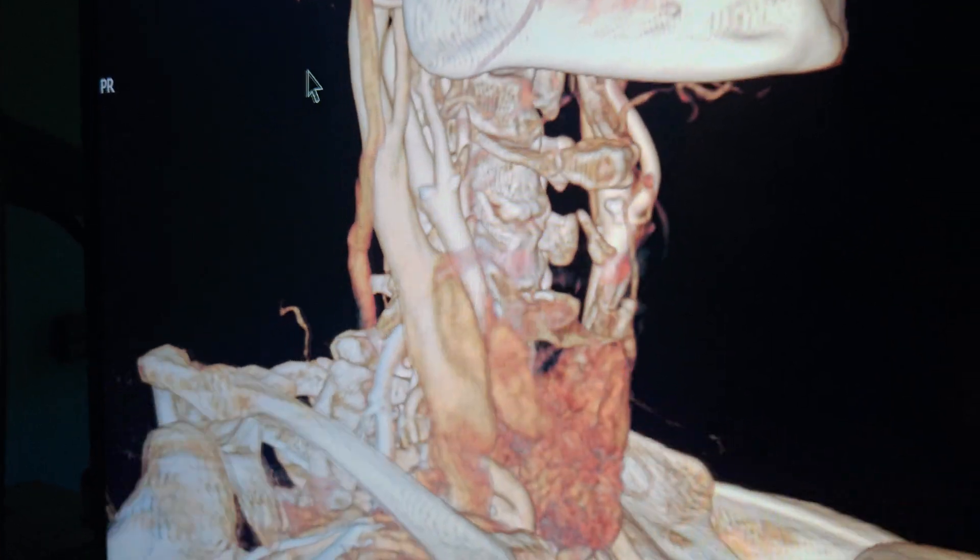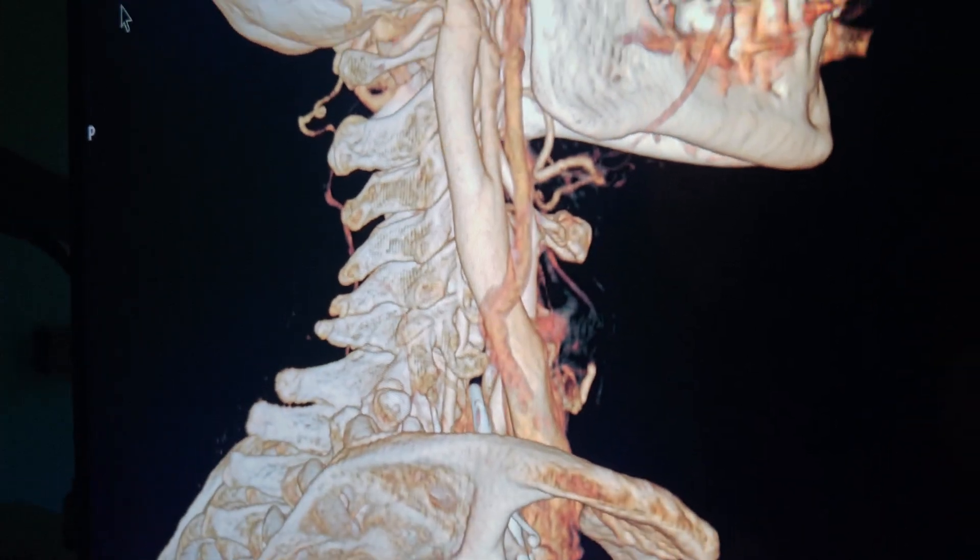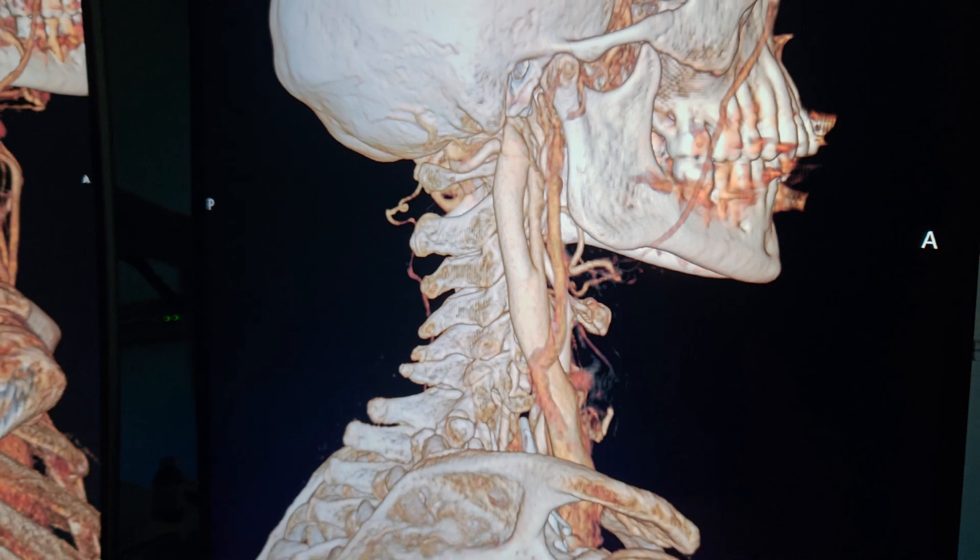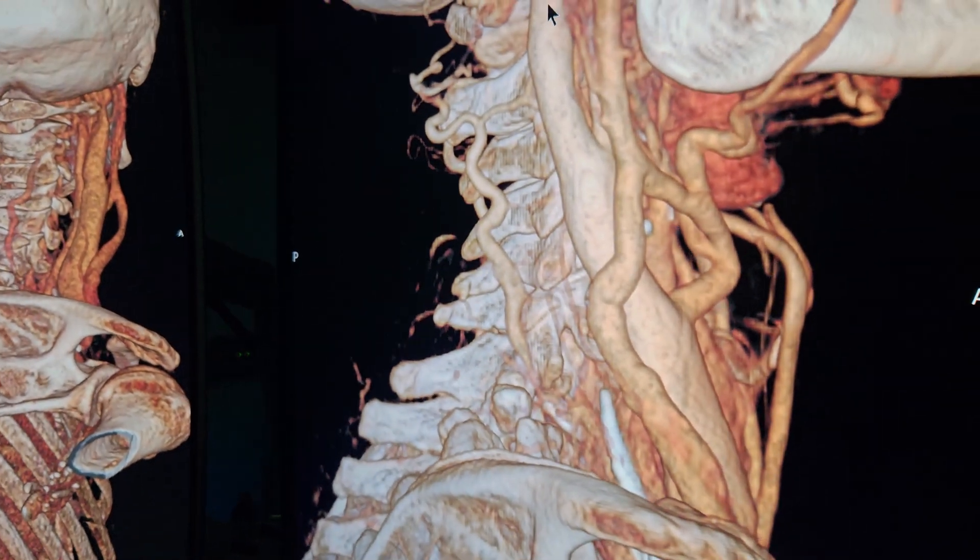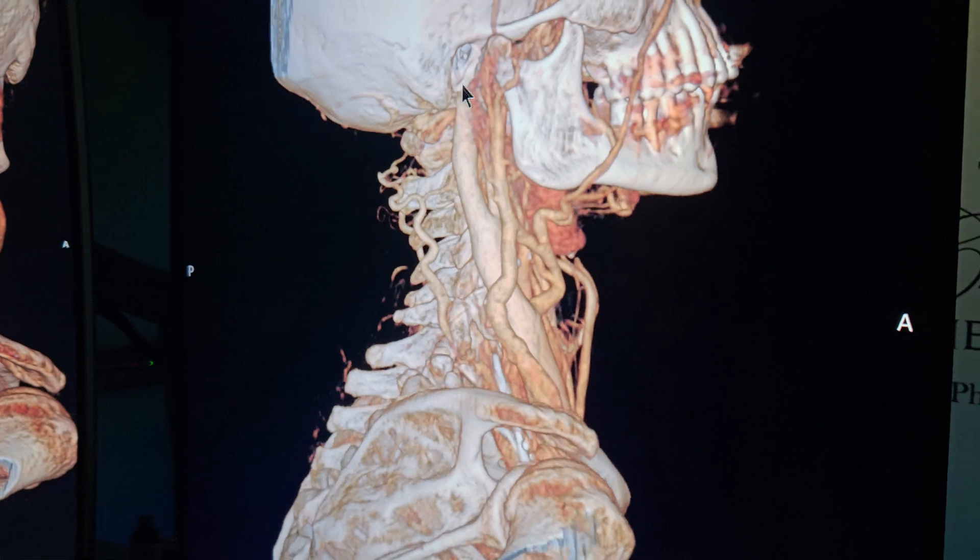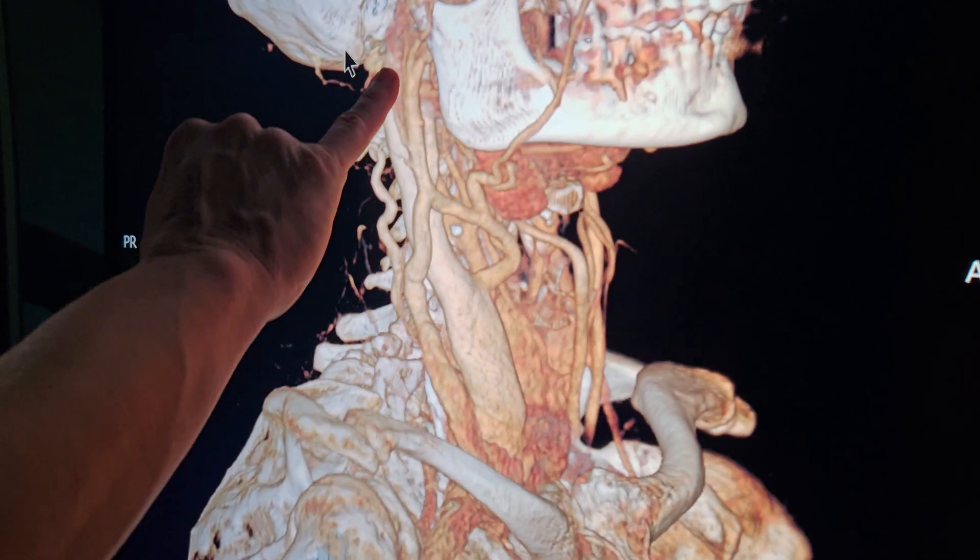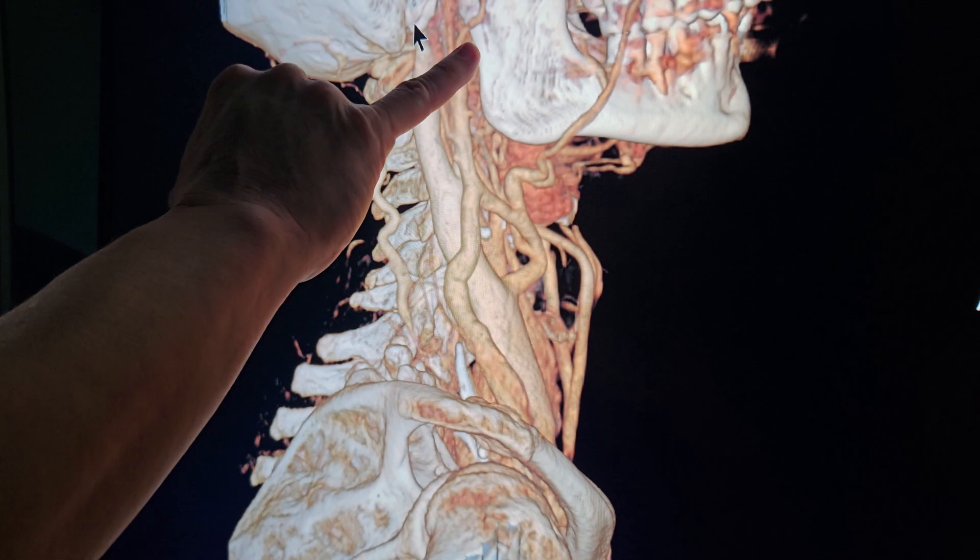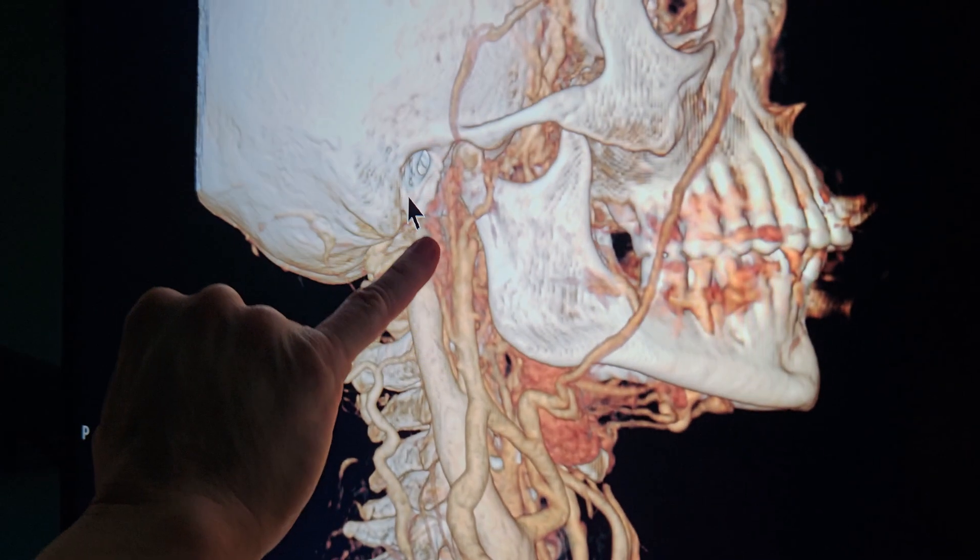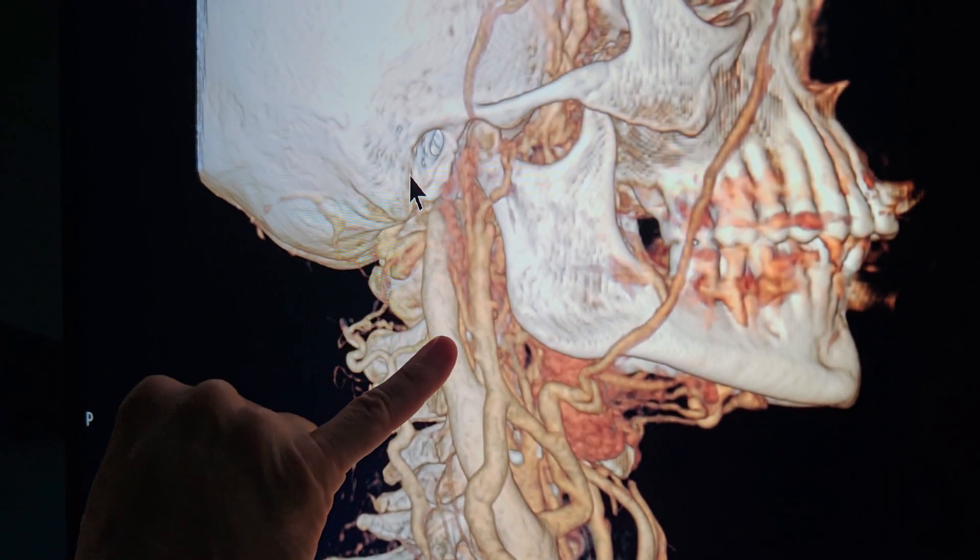Now this is the arterial phase and let's bring the venous phase right up front. This is the venous phase, a few seconds later, and you can see how this one jugular vein has a collateral that's coming out from behind the jaw up in there. So it's actually like she's got two little jugular veins coming out.